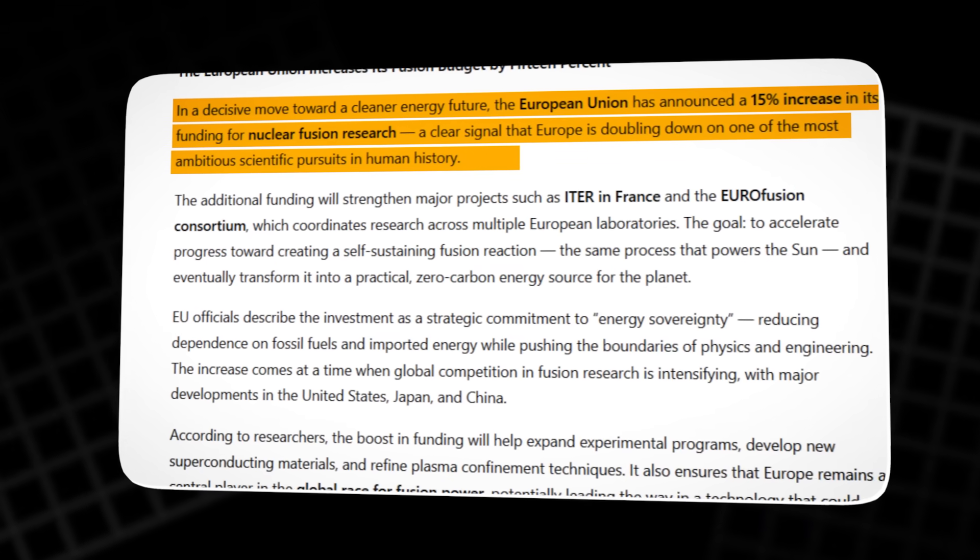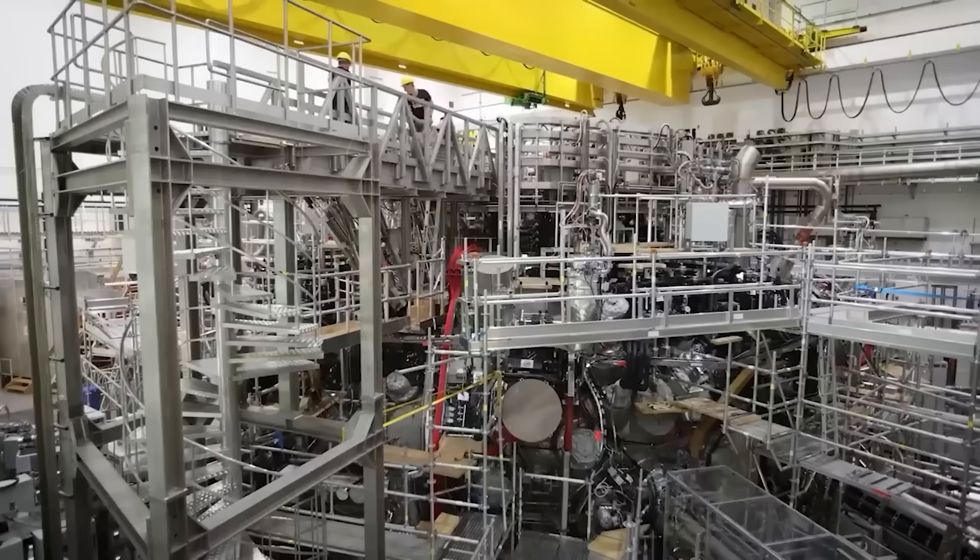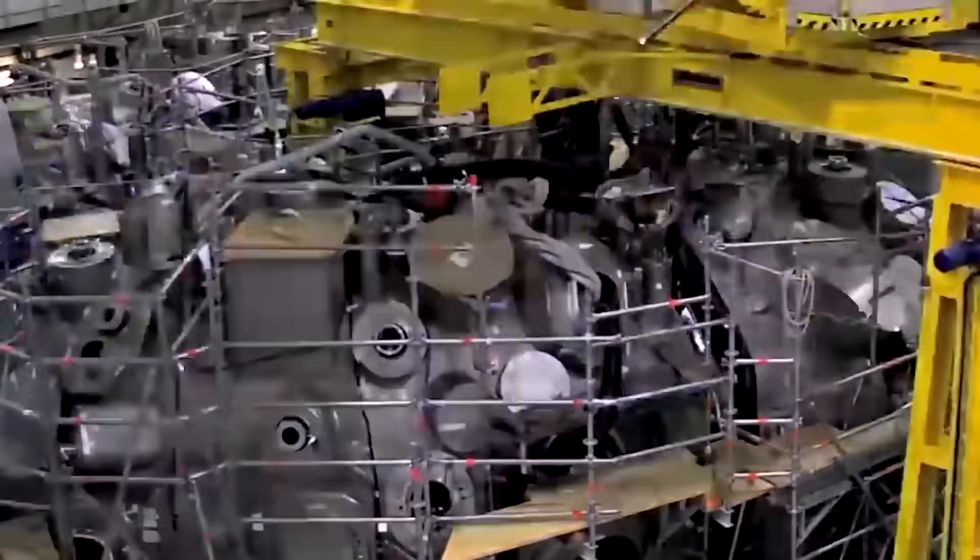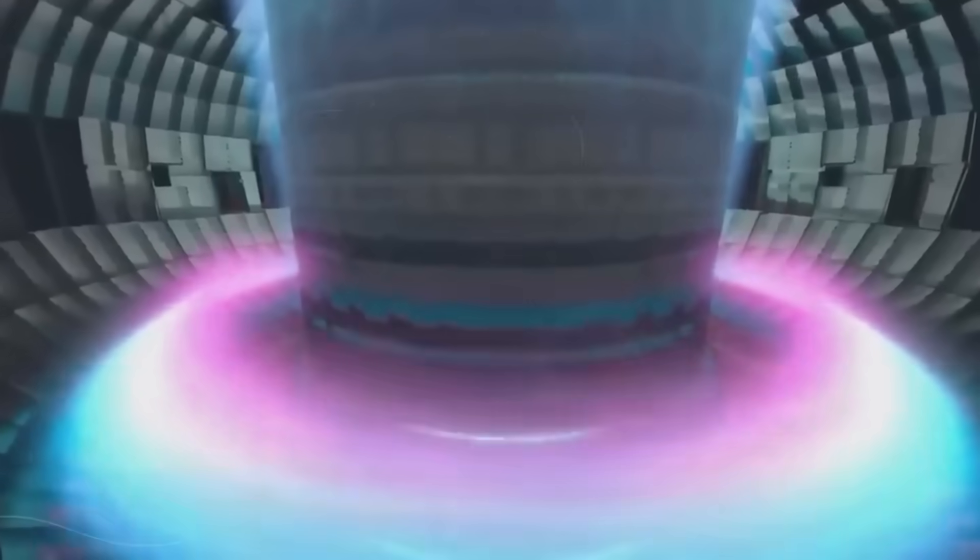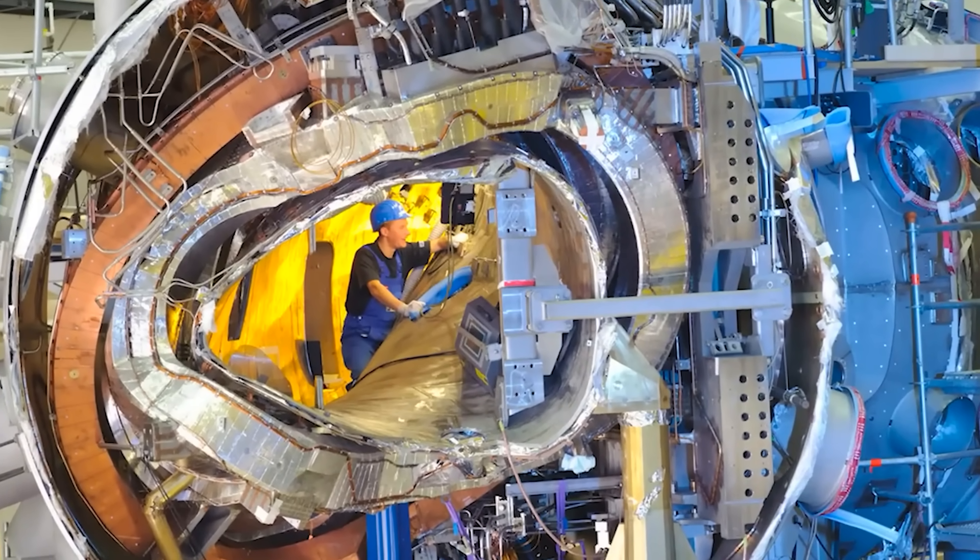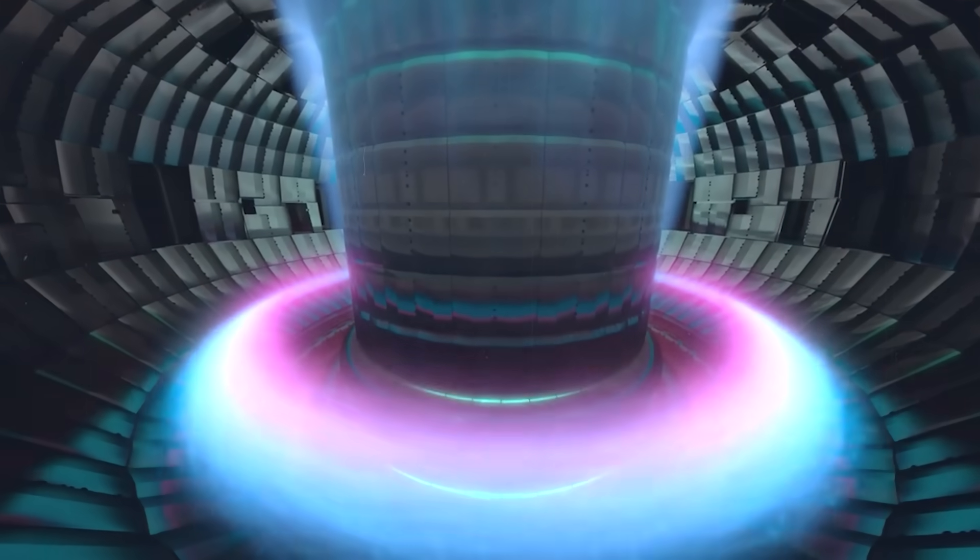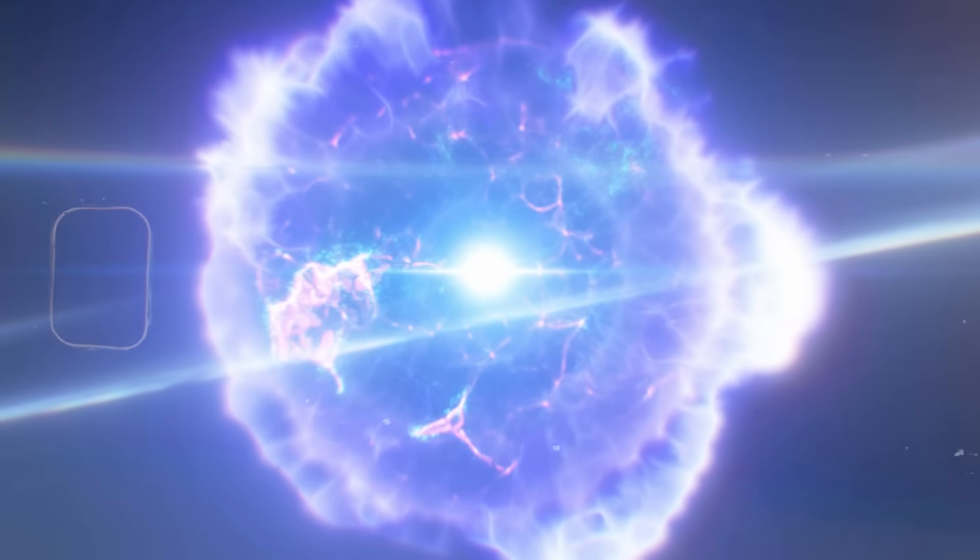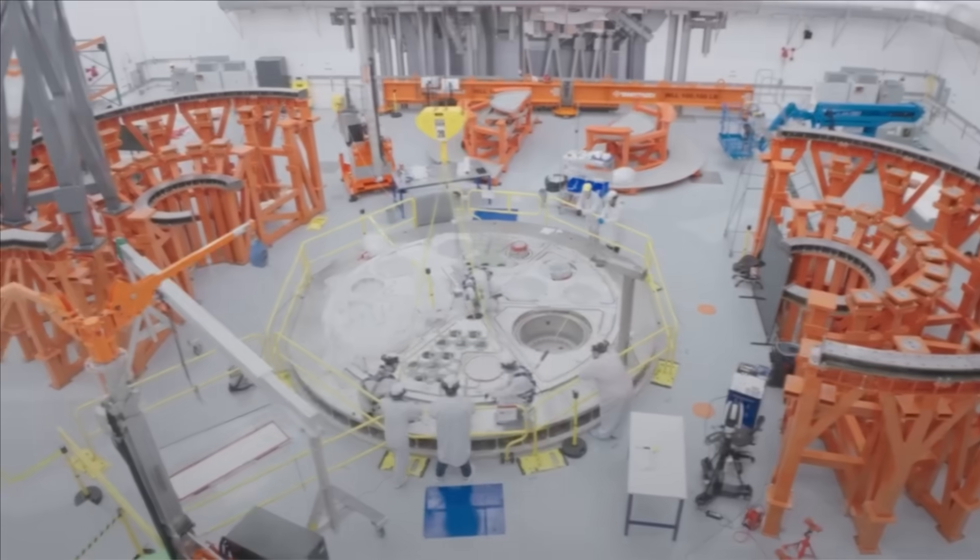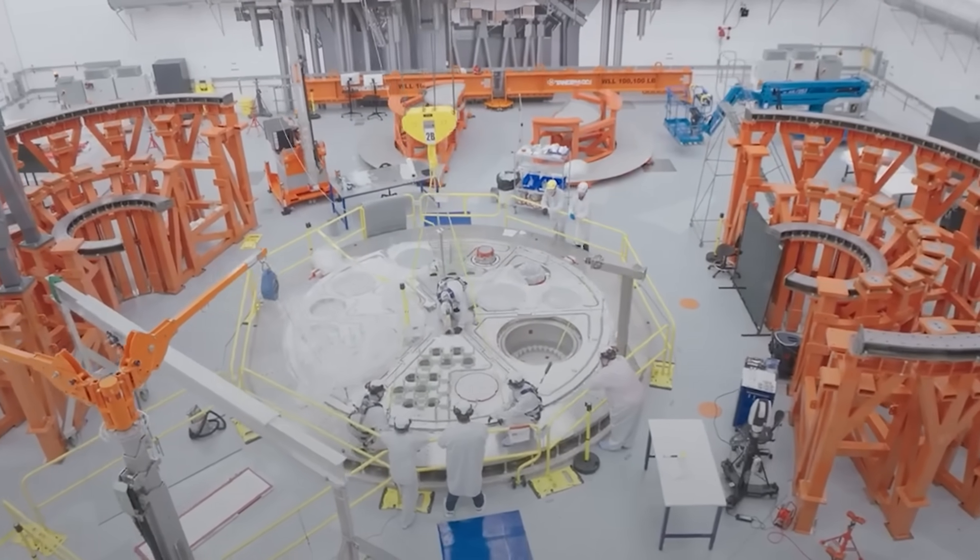Governments reacted fast. The European Union increased its fusion budget by 15%, directing much of that funding towards Stellarator research. Germany went even further, pledging half a billion dollars to scale up the Wendelstein program. They want to move beyond experiments and build a prototype reactor capable of generating real power for the grid. At the same time, Germany's Federal Office for Radiation Protection began drafting the world's first official fusion-specific safety framework. Until now, no country has had laws designed for fusion energy. Only fission. Germany intends to change that, turning scientific progress into national infrastructure. It's not just about experiments. It's about industry, jobs, and power.